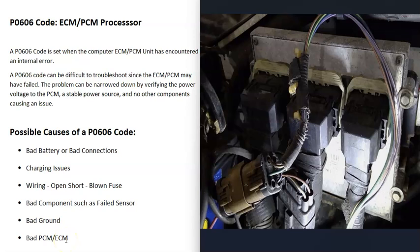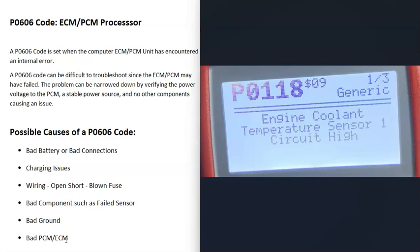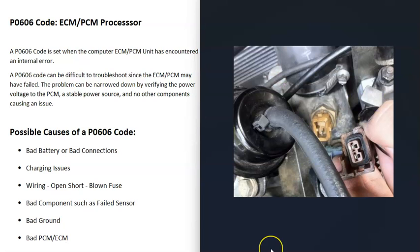Another thing that can affect these computer modules is a failed component — for example, a sensor that's going bad or shorting out can sometimes affect the ECM or PCM. So if you're getting other codes, pay attention to them. For example, if you're also getting a P0118 code (engine coolant temperature sensor circuit high), you could unplug that sensor and see if the P0606 code clears. If that sensor was shorted and causing problems with the computer module, the P0606 would clear, confirming a bad sensor was the cause.